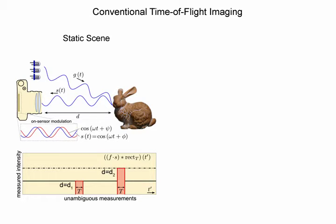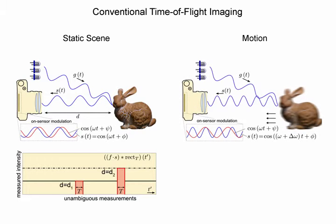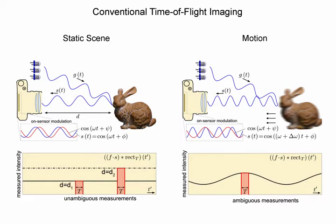For objects in motion, however, the illumination frequency is distorted by the Doppler effect before it reaches the camera. This frequency shift results in ambiguous measurements. One depth could correspond to different intensity values, or alternatively, two different depths could map to the same measured value.